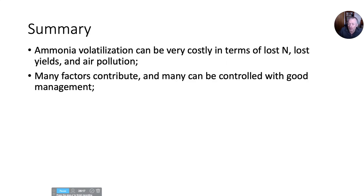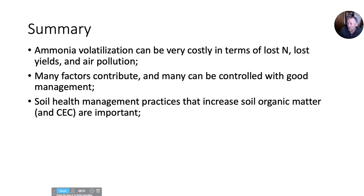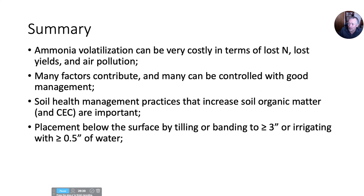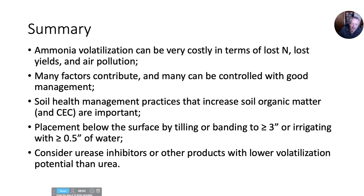In summary, ammonia volatilization can be very costly in terms of nitrogen loss, lower yields, and air pollution — it's a smog producer. There are many contributing factors, but a lot of these can be controlled with good management. Soil health management practices that increase soil organic matter are key. Placement below the surface by tilling or banding to at least three inches, or irrigating with at least a half inch of water, will drastically reduce volatilization. Urease inhibitors or other products should only be considered if you absolutely have to apply urea under high-risk conditions and cannot do those other management practices, since they can add six dollars per acre or more. Thanks very much — I look forward to any discussion and questions.